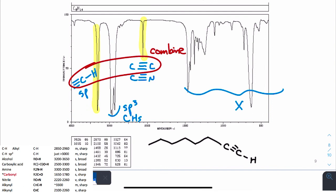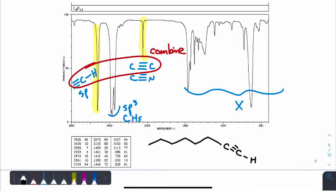The bottom line with infrared is that we use it to identify the key functional groups present in the molecule. Typically we can't tell exactly where they are in the molecule, but we can identify whether they are present or absent.